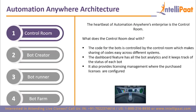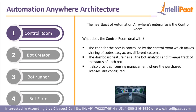Control room — it is called the heartbeat of Automation Anywhere's enterprise. The code for the bots is controlled by this control room, which makes sharing of the codes easy across various systems. It also has a dashboard feature with all the bot analytics and creates a track of the status of each and every bot. It also provides licensing management where purchased licenses are configured.